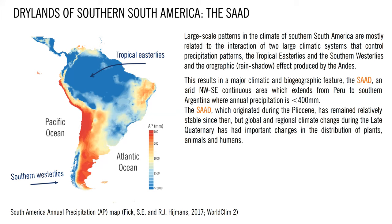This results in a major climatic and biogeographic feature: the South American Arid Diagonal, which extends from Peru to southern Argentina, and where annual precipitation is less than 400 millimeters. The South American Arid Diagonal, which originated during the Pliocene, has remained relatively stable since then.